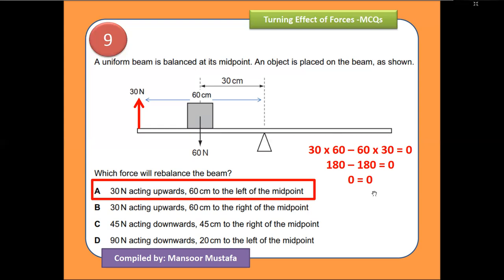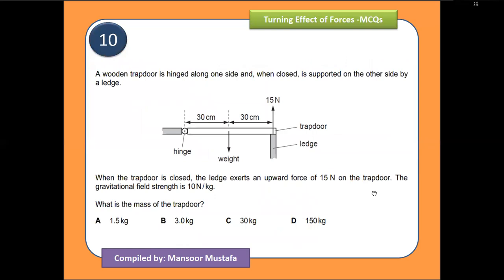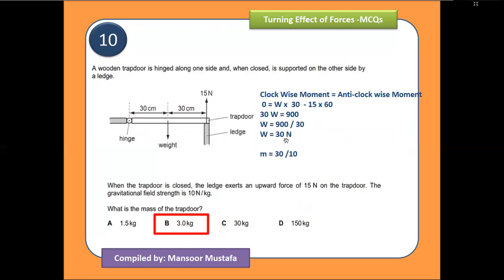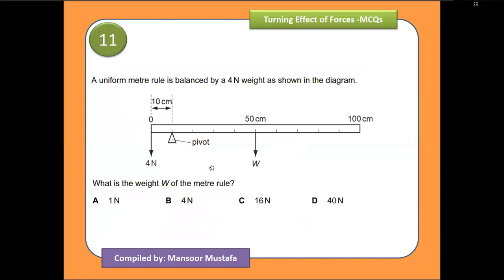The next question is similar, but you need to find mass instead of weight. We calculate weight first — that is 30 newtons — then use the formula W = m × g, so mass = weight ÷ gravity = 30 ÷ 10 = 3 kilograms. The option 30 kg is a trap — that is the weight in newtons, not the mass. The correct answer is option B: 3 kilograms.